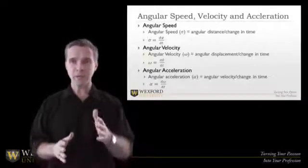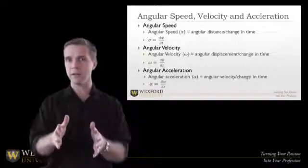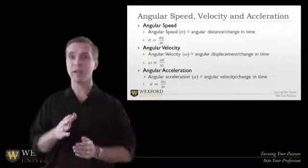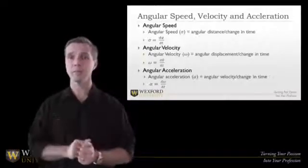We can see this direct one-to-one correlation of linear to angular, except linear is straight line. Angular, we're measuring it in degrees or radians. Simple as that.